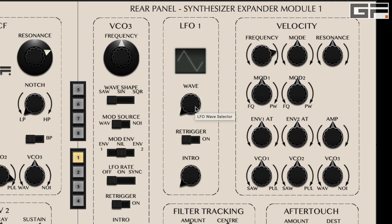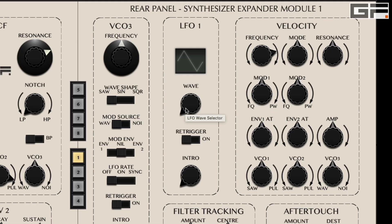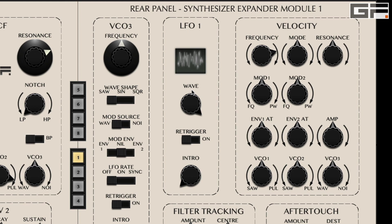The LFO1 controls give detailed adjustment of the main LFO, the rate of which is determined by the knob on the front panel. In this section we have control over wave shape including triangle, sine, ramp up, half square, square, and noise for sample and hold type modulation. There is also a key re-trigger option plus an intro or ramp-in knob which allows a delay before the LFO takes effect.